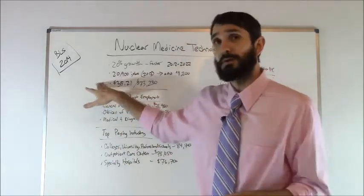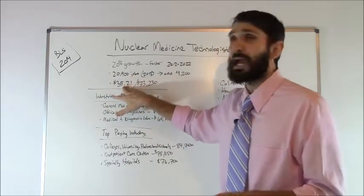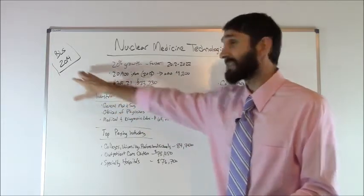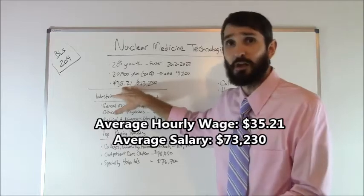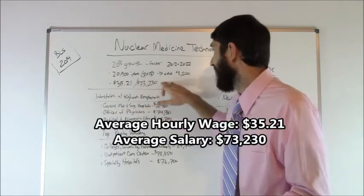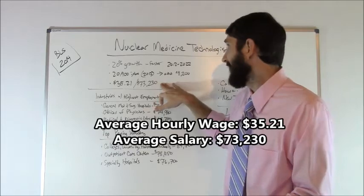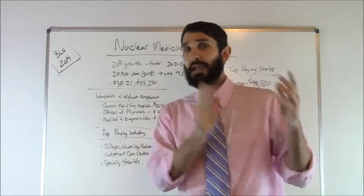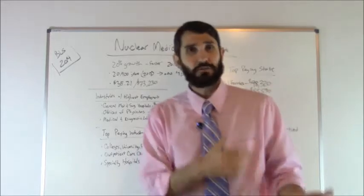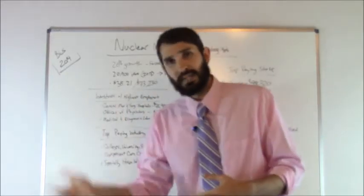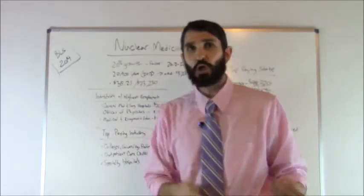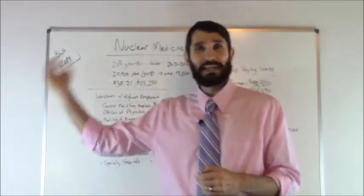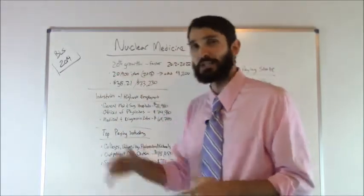Now how much money do they make? Well, the average hourly wage in the United States as of 2014 was $35.21 and the annual salary $73,230. Now that is just an average. You may make more or less depending on your certification, the state in which you live, the industry in which you work, whether you're entry level or at the end of your career. It's just an average so I'm going to go through some of those things right now.